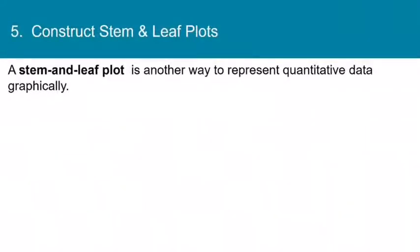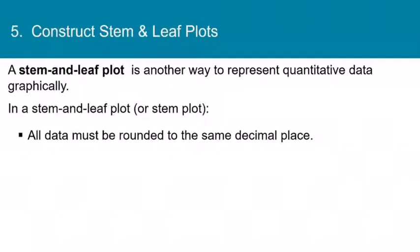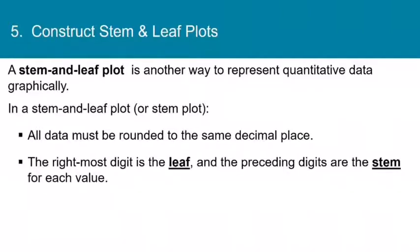Now let's talk about how to create a new type of plot called a stem and leaf plot. A stem and leaf plot is just another way to represent quantitative data graphically. In a stem and leaf plot, which is sometimes called a stem plot for short, all the data must be rounded to the same decimal place. The rightmost digit is then considered the leaf, and all the digits before the last one are considered the stem.